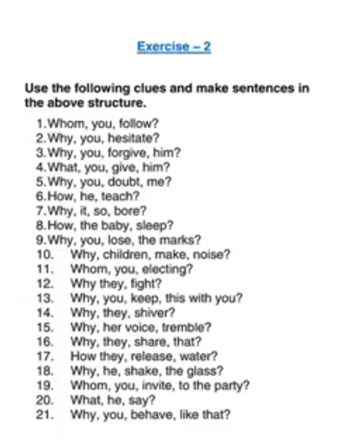Tenth one — children: with children you get are. Why are children making noise? Eleventh one: Whom are you electing? Twelfth one: Why are they fighting? Thirteenth one: 'Why you keep this with you?' — in present continuous tense WH questions, with you, you should get are, and keep should become keeping. It's almost like maths — almost like an equation. Why are you keeping this with you?